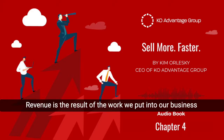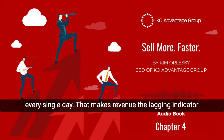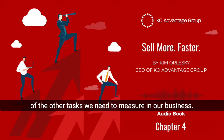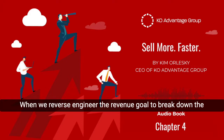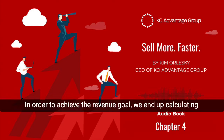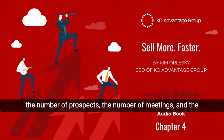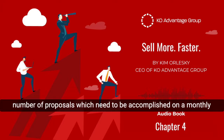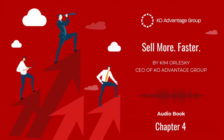Revenue is the result of the work we put into our business every single day. That makes revenue the lagging indicator of the other tasks we need to measure in our business. When we reverse engineer the revenue goal to break down the tasks we need to perform, we end up calculating the number of prospects, the number of meetings, and the number of proposals which need to be accomplished on a monthly or weekly basis.